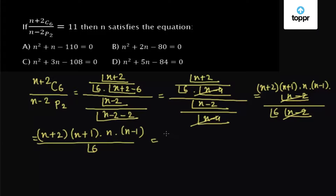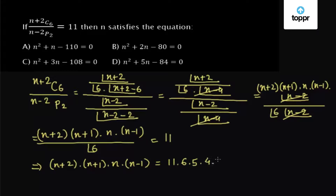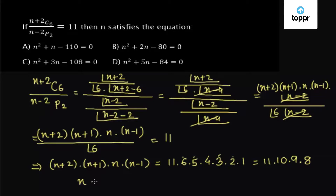Multiplying factorial(6) on both sides gives (n+2)(n+1)(n)(n-1) = 11 × 6 × 5 × 4 × 3 × 2 × 1. We rewrite the right-hand side as a product of 4 factors: 11 × 10 (from 5×2) × 9 (from 3 and part of 6) × 8 (from 4 and remaining 2). So we can see that n equals 9.